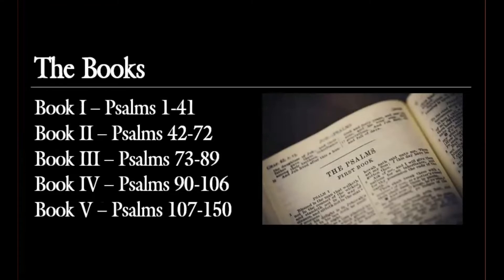The book of Psalms is divided into five books — you may have noticed this. It's something I noticed as a kid, wondering what this was. There are lots of theories about these divisions, mostly conjecture — people find certain themes in the different sections. We have a lot of David's psalms throughout, especially in Psalms 1 to 41. The sons of Korah wrote about 12, Asaph about 12, and David by far wrote the most.